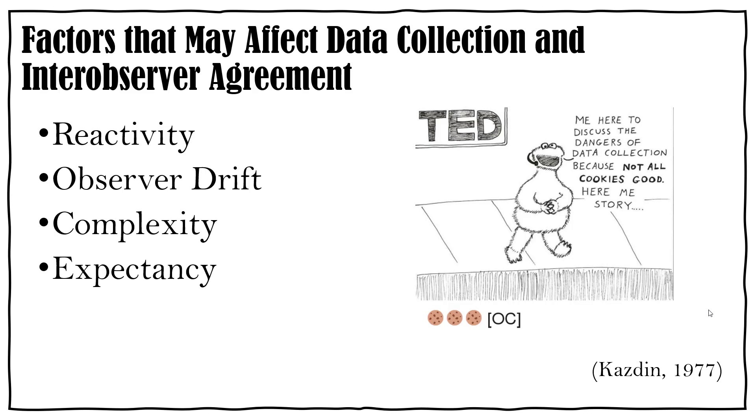And last but not least, expectancy. So we're human, we all have biases. And a lot of times those biases, basically unintentional, we don't realize that they're happening, but they can affect our recording, our recording systems, or measurement of behavior. So sometimes if you want to see a behavior occur, you do. So keeping in mind those biases and things like that can be really important.